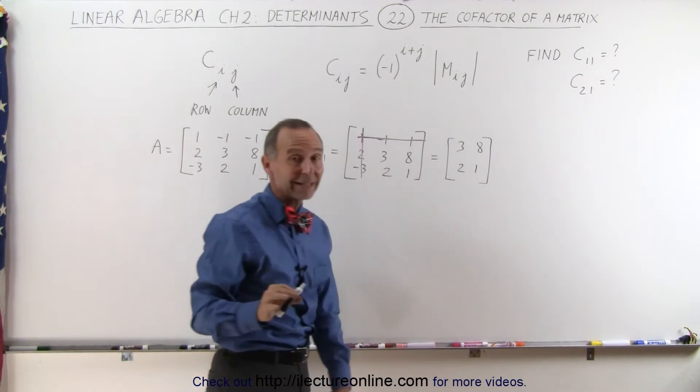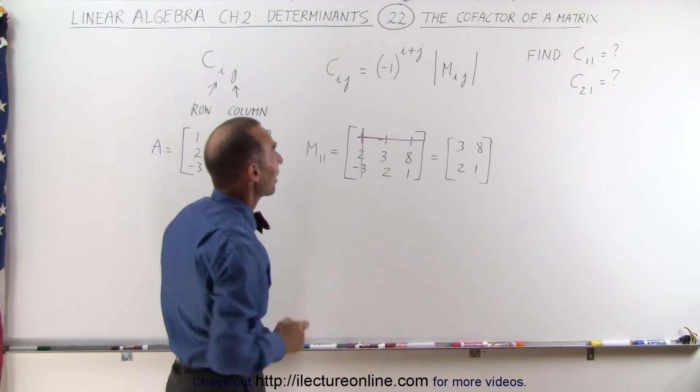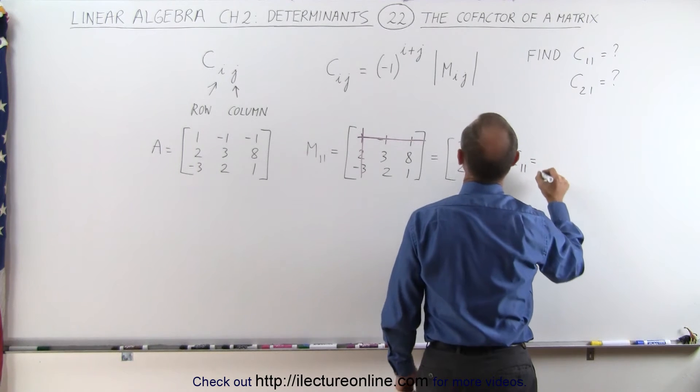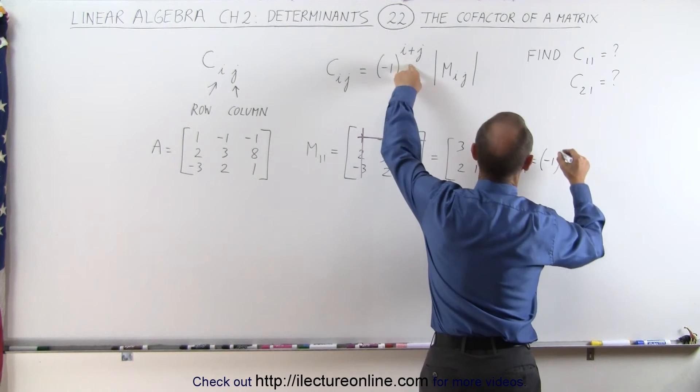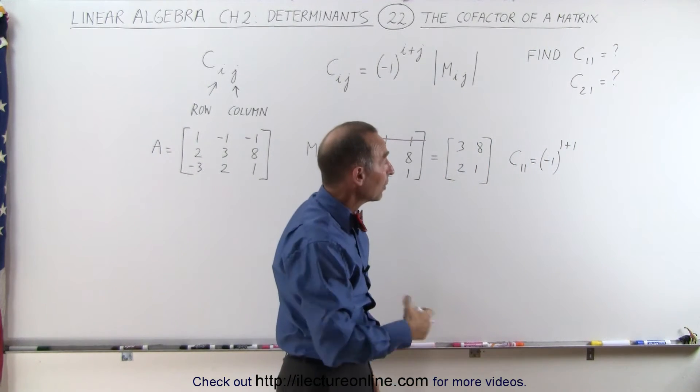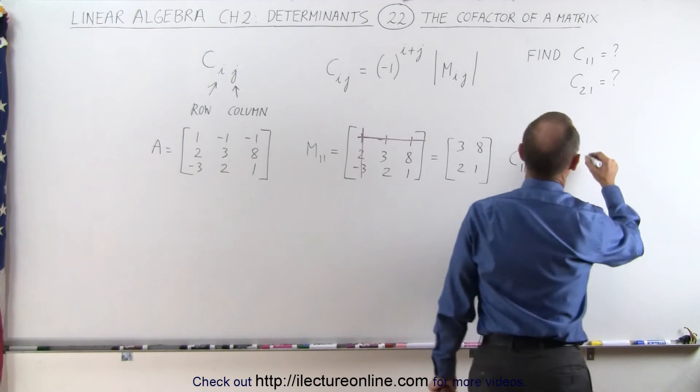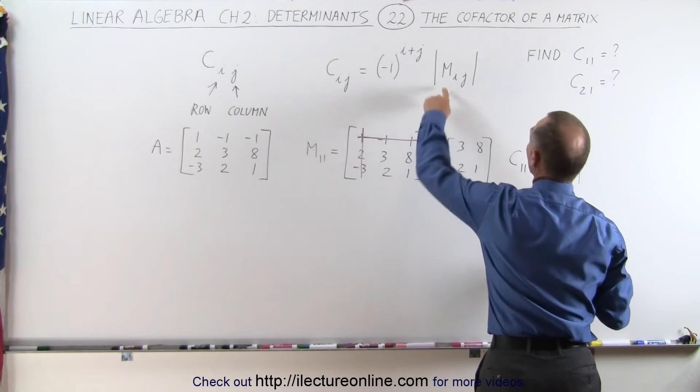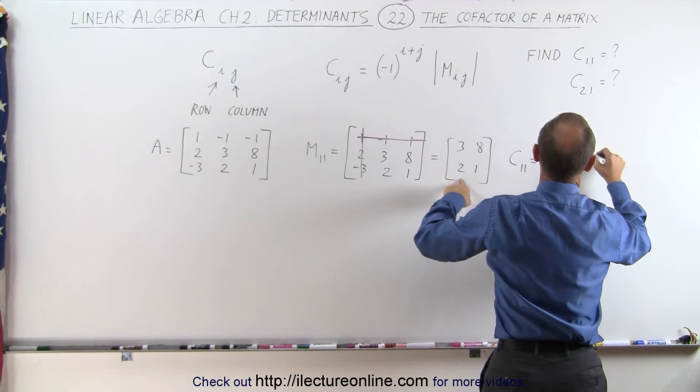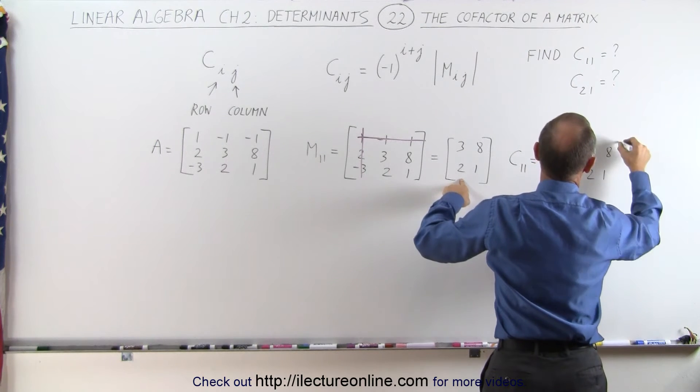And now we're ready to find c11, the cofactor of that matrix. And so c11 is going to be equal to minus 1 raised to the 1 plus 1 power, so that's raised to an even power, that becomes a positive 1, times the determinant of this minor, which is 3, 8, 2, and 1.